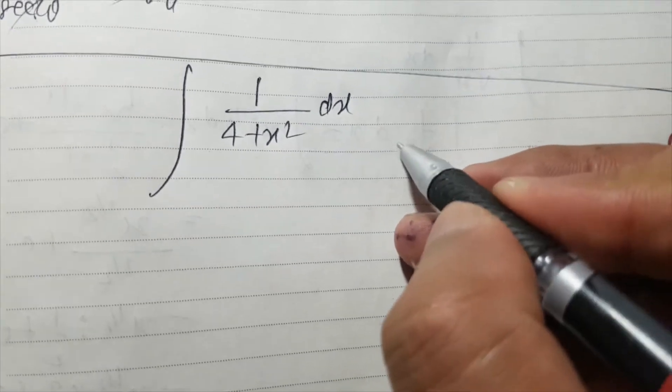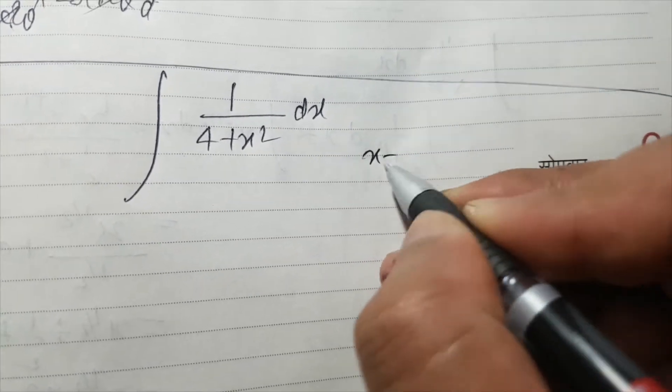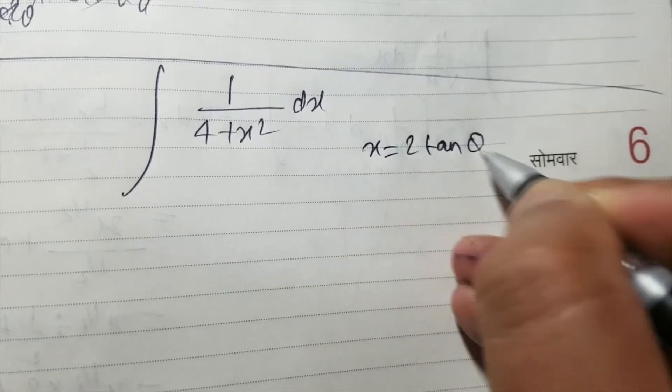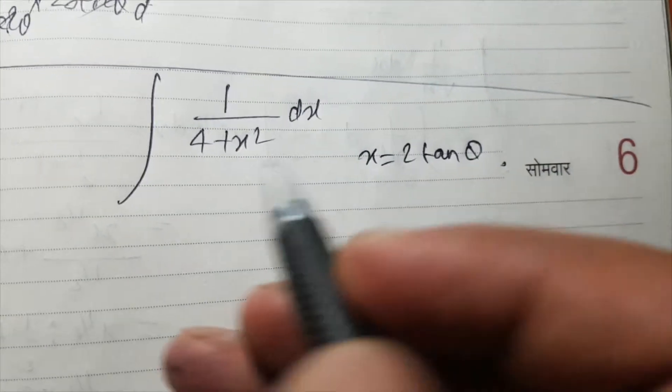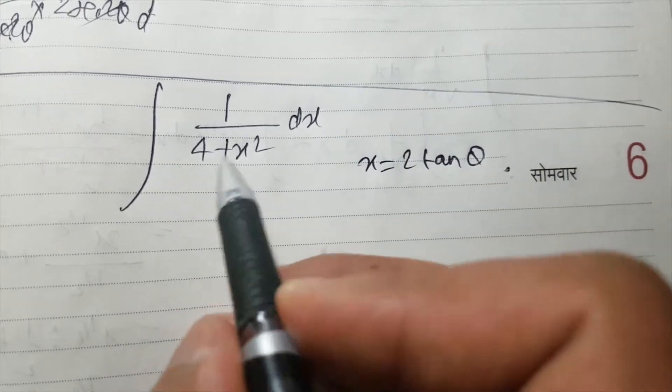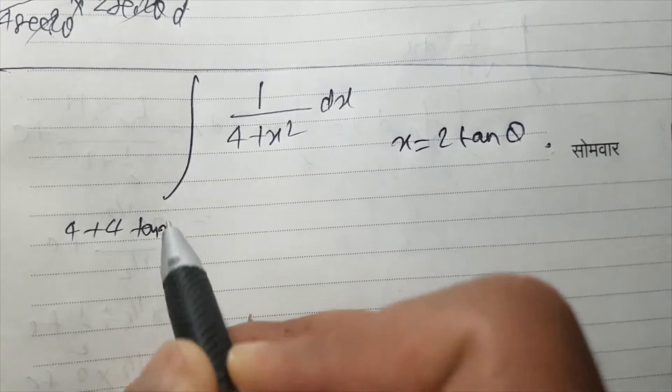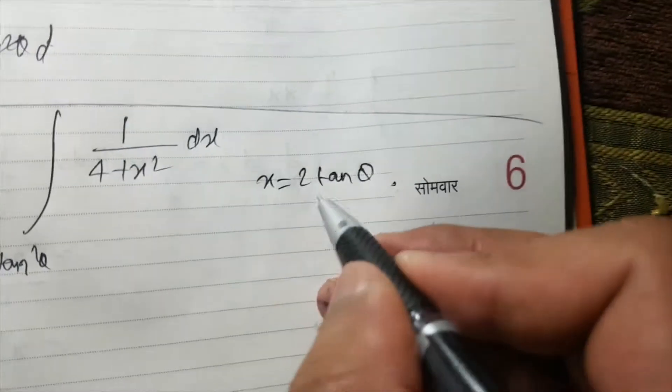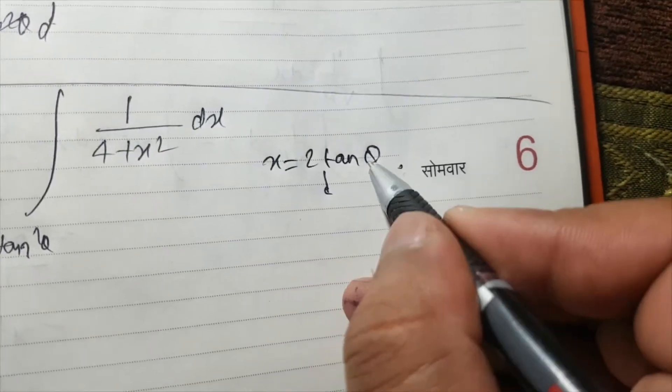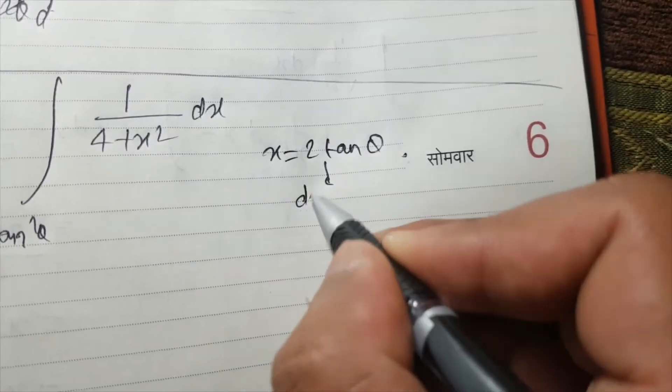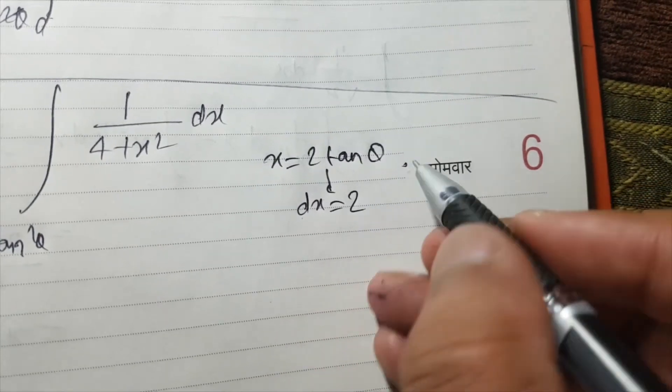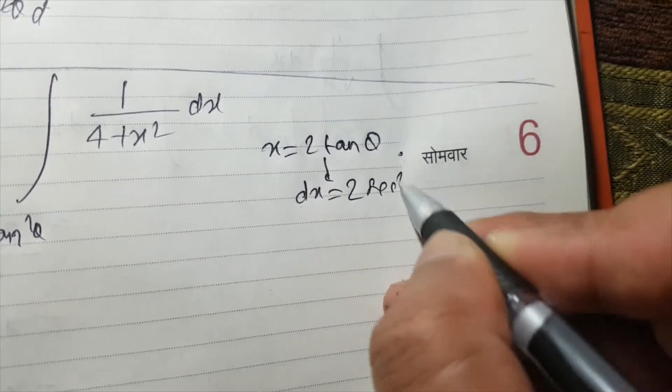Here we will do a trick substitution x equal to 2 tan theta. Why am I doing this? Because if I put it here, I will get 4 plus 4 tan square theta, and in place of dx we will differentiate both sides. We will get dx equal to 2, the differentiation of tan theta is sec square theta d theta.